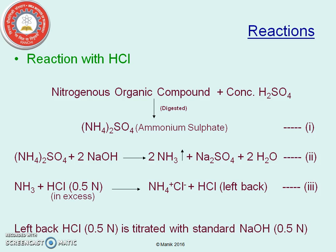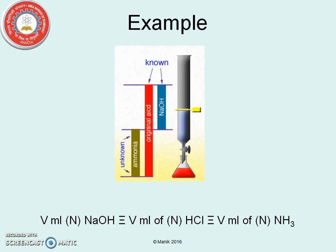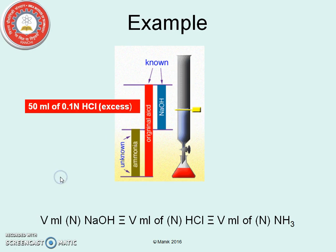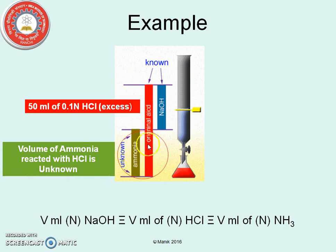This left back HCl is then treated with the standard sodium hydroxide solution. For example, let us say we are taking 50 ml of 0.1 normal HCl, that is in excess. It is reacted with the ammonia which is being trapped in the solution. The volume of the ammonia reacted with HCl is unknown right now — we don't know how much amount has reacted.